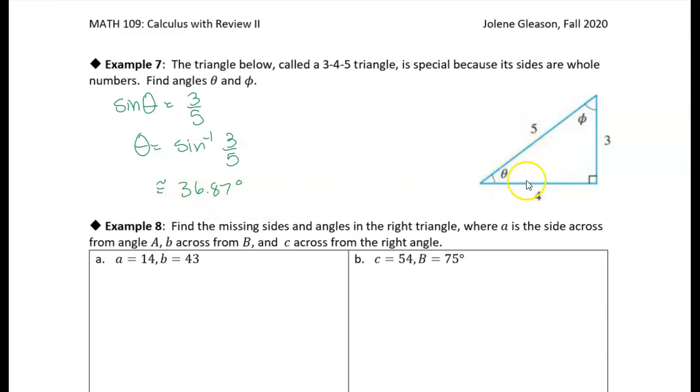There are different ways I could approach this. I could say that cosine of theta equals adjacent over hypotenuse, so four over five, and do the inverse cosine. Or I could say tangent of theta equals three over four and do the inverse tangent. There are multiple ways to figure out theta, but any method you choose will give you the same angle.